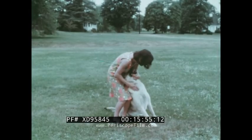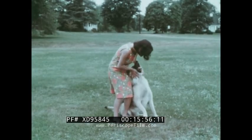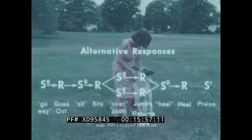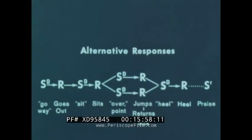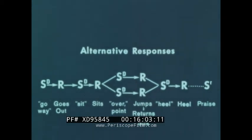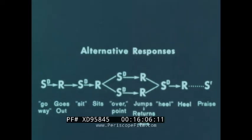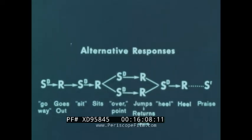A paradigm for this chain might look like this. Of course, the handler's behavior is also a chain, controlled partly by SDs from a judge. She gives no command to her dog until the judge gives her the appropriate SD.